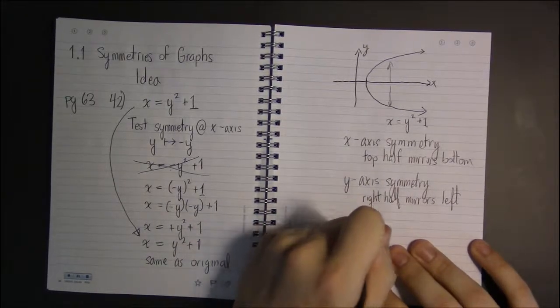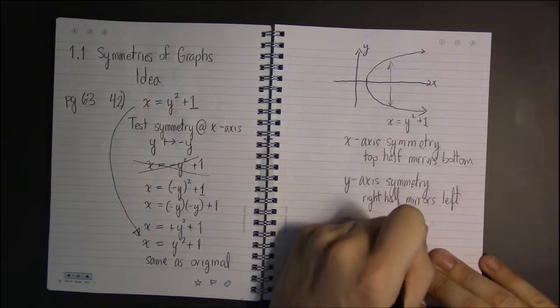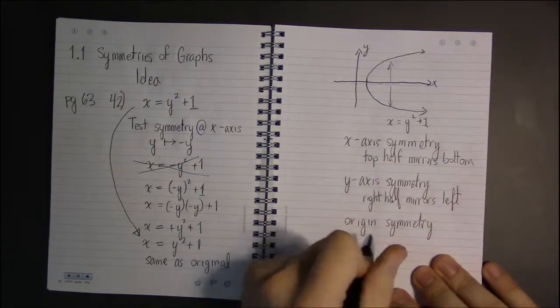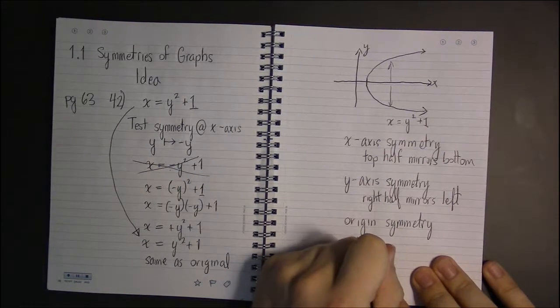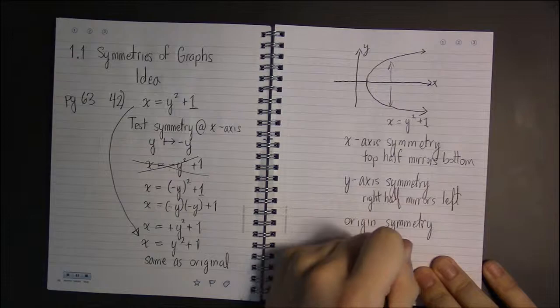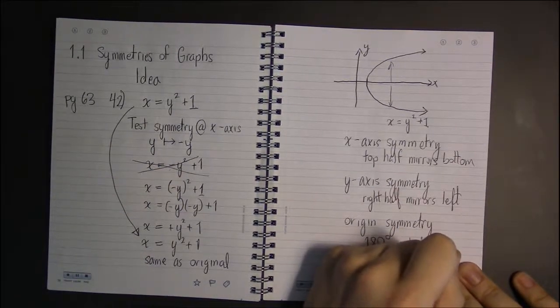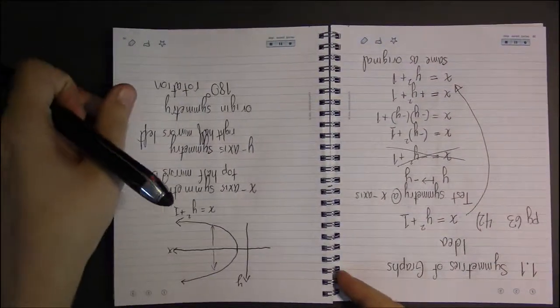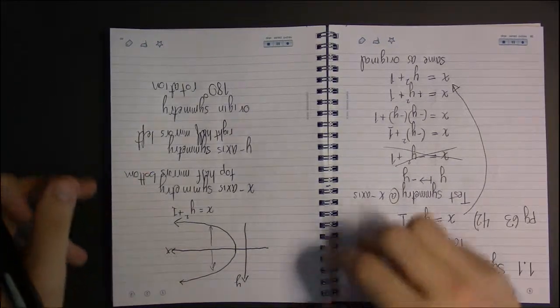Origin symmetry is simply rotational symmetry. It means the graph is symmetric under a 180-degree rotation, so you could flip it upside down and if it looks the same, you have origin symmetry.